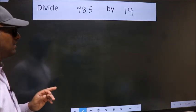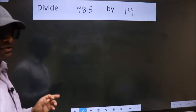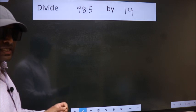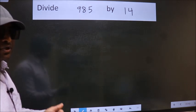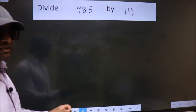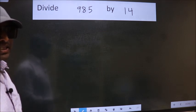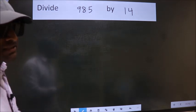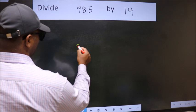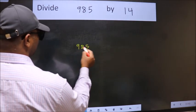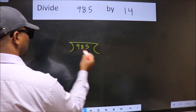Divide 985 by 14. While doing this division, many do this mistake. What is the mistake that they do? I will let you know. But before that, we should frame it in this way. 985 here. 14 here.